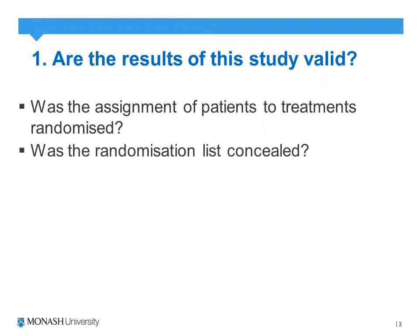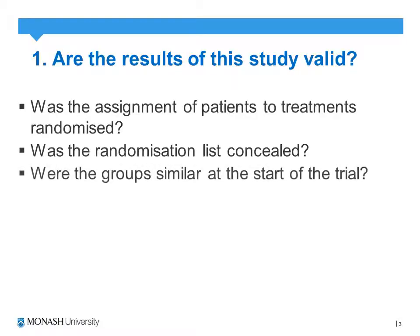That leads into the second question: was the randomisation list concealed? When we're talking about blinding investigators, we also want to blind at the randomisation stage, just to ensure that selection bias isn't an issue. We want to identify what randomisation procedure was used — for example, a computer-generated random number table — but also how it was implemented, such as an independent investigator allocating patients to either the intervention or control group based on that sequence generation.